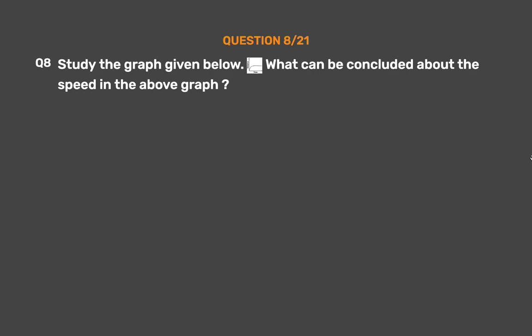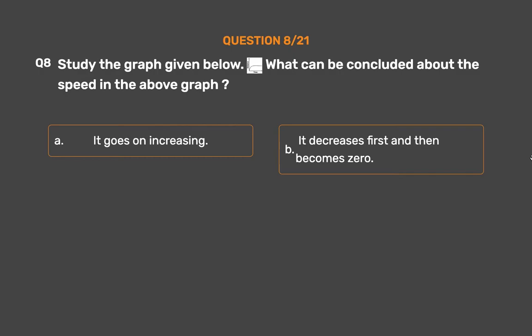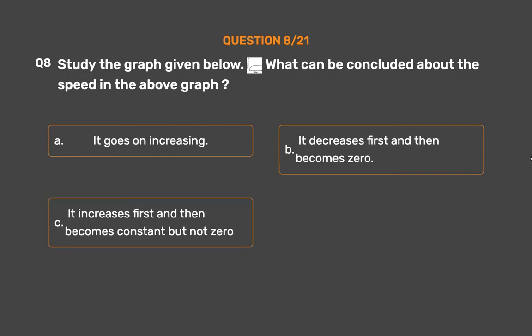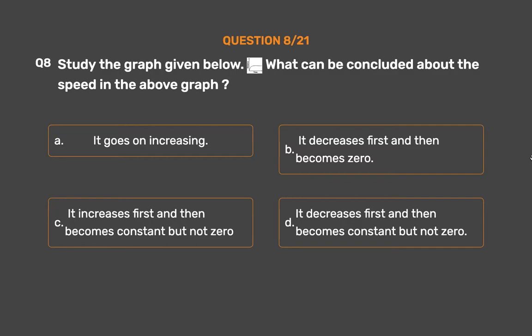Question No. 8. Study the graph given below. What can be concluded about the speed in the above graph? Option A: It goes on increasing. Option B: It decreases first and then becomes zero. Option C: It increases first and then becomes constant but not zero. Option D: It decreases first and then becomes constant but not zero.